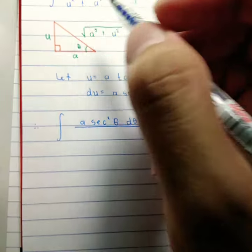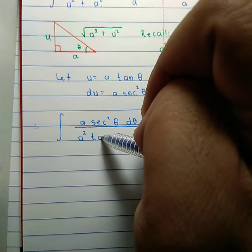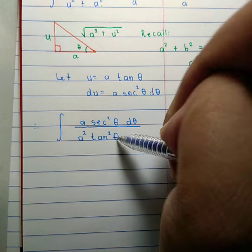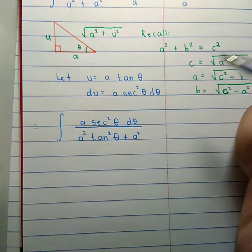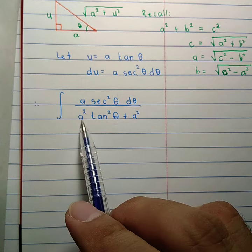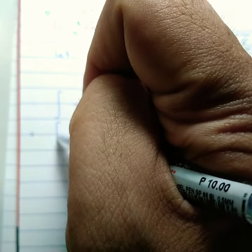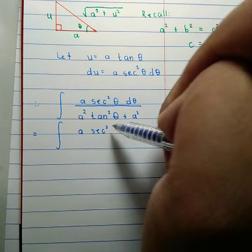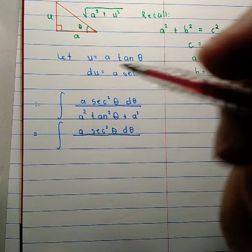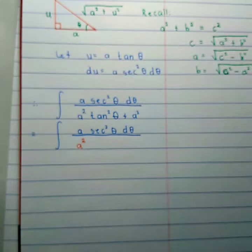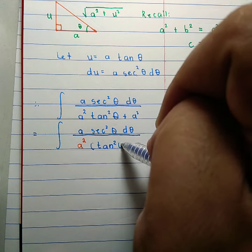In the denominator, u squared becomes (a·tan θ)² which is a squared tangent squared theta — be careful, that is different from tangent theta squared. Plus a squared. Since the denominator has a common factor, we factor out a squared. What remains inside is tangent squared theta plus 1.